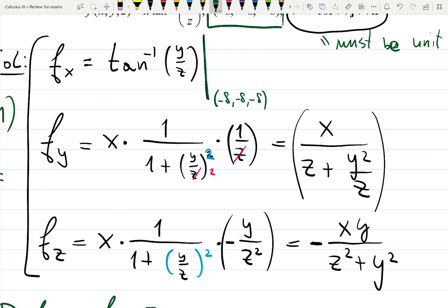So arctangent of 1 is going to be pi over 4. Because remember, pi over 4 is that angle where sine and cosine match. So what angle's tangent gives you 1? Pi over 4. So that was very nice.